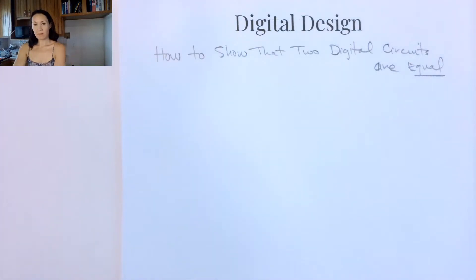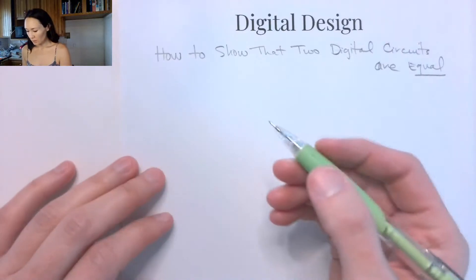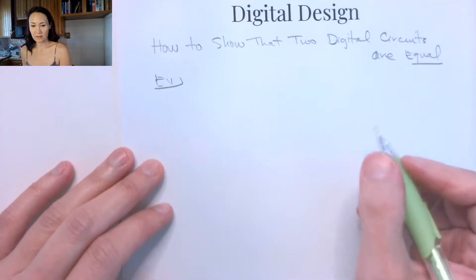Hi students, so the next thing we might be asked to do is to show that two digital logic circuits are actually equal, that they implement the same logic. So let me show you an example of a problem that looks like that.